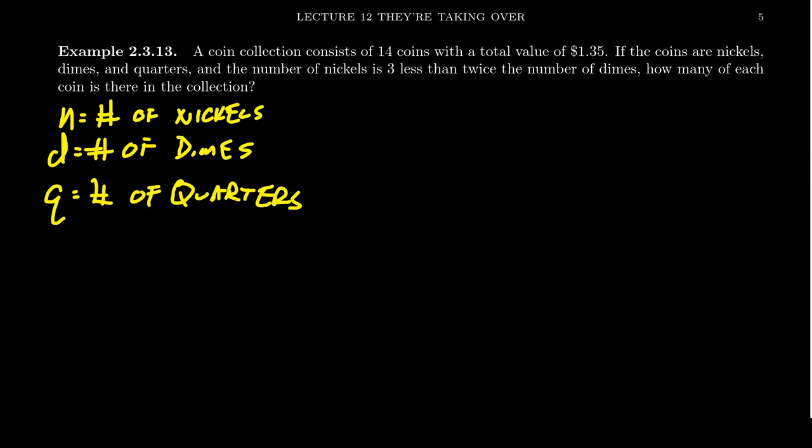As this is a mixture problem, there are some things we'll be able to get quickly. We know there were 14 coins, so n plus d plus q equals 14. We also know there is $1.35 total. Nickels are worth $0.05, dimes $0.10, and quarters $0.25, so 0.05n plus 0.10d plus 0.25q equals 1.35.